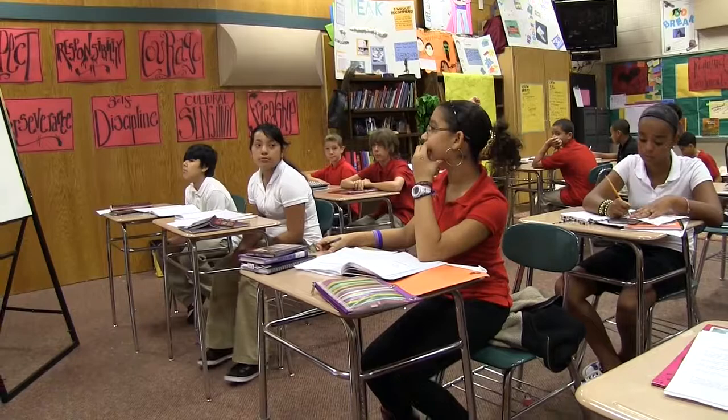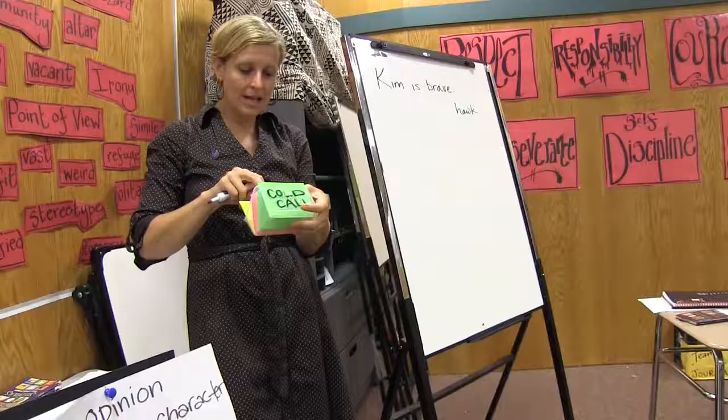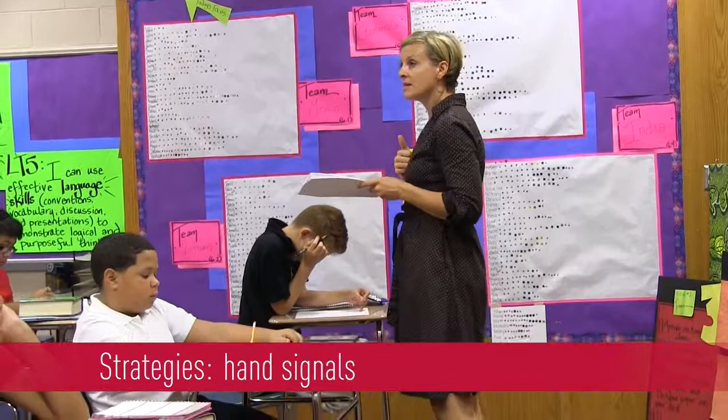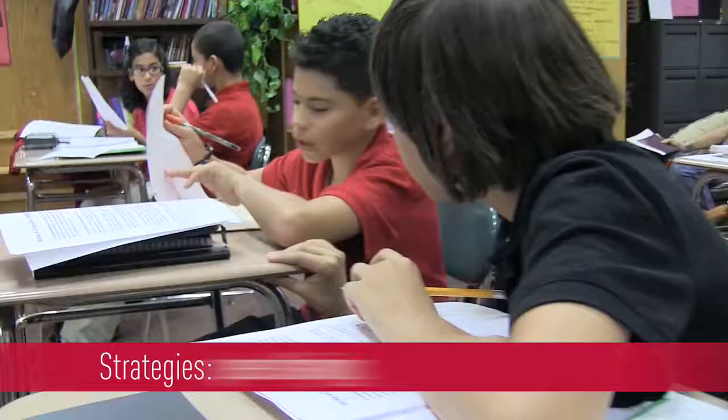I check for understanding by using cold call so that I'm sure I'm getting everybody all the time. I also like to use thumbs up, thumbs to the middle, thumbs down. You hear it and it makes sense to you but you didn't find it — give me a thumbs to the side. I do a fist to five, students pairing up and then sharing out once they share with each other. 'Your thinness makes me look like a walking skeleton.' Perfect.